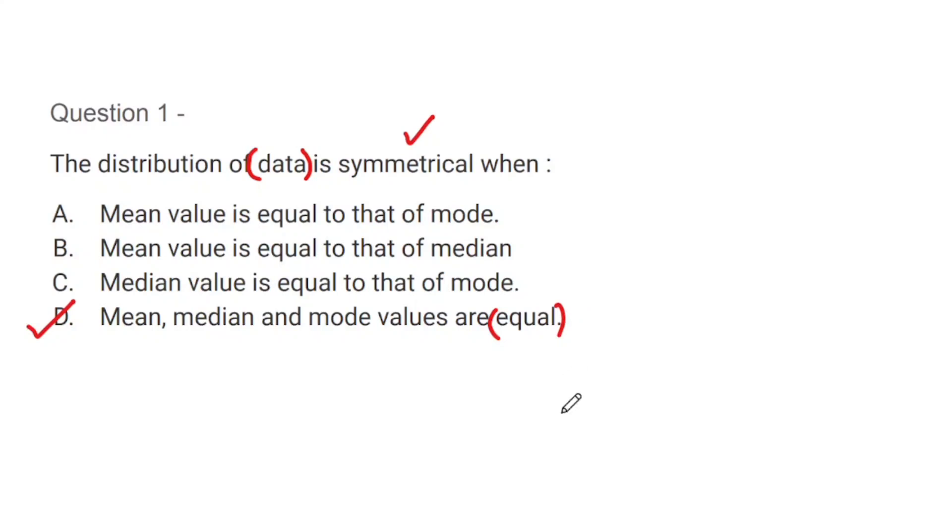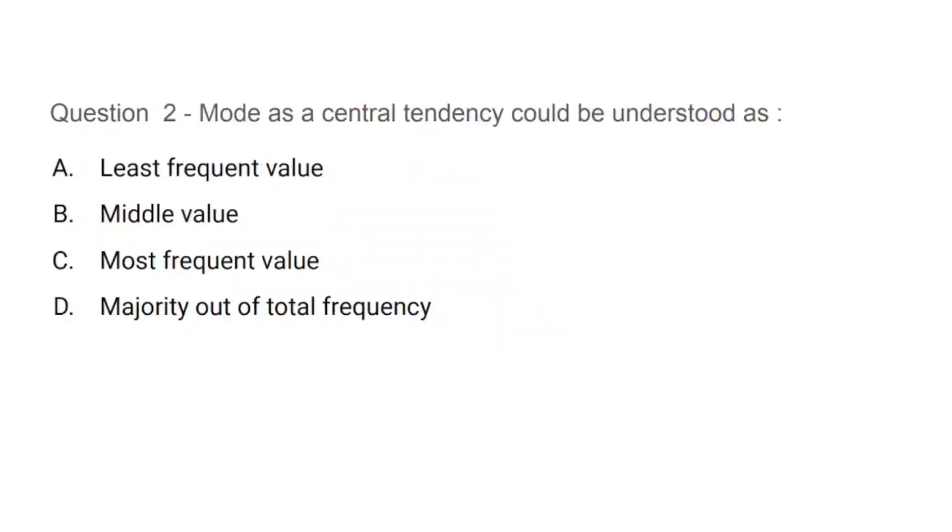Question number 2: Mode as central tendency could be understood as - least frequent value, middle value, most frequent value, or majority out of total frequency. Easy theoretical question from mode. The correct answer is C, that is most frequent value. Whatever data we have, the most frequently occurring value is our mode.